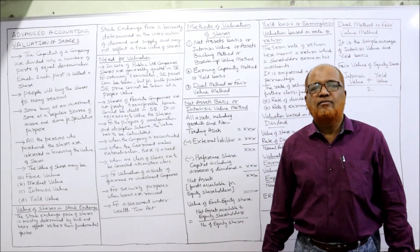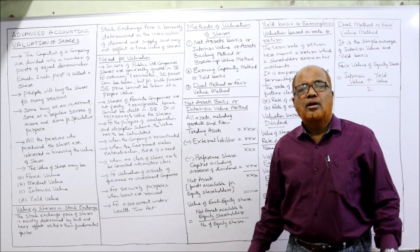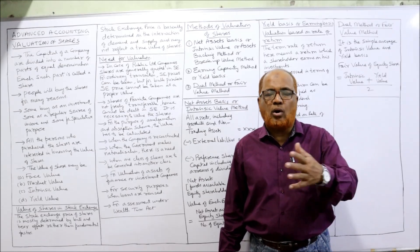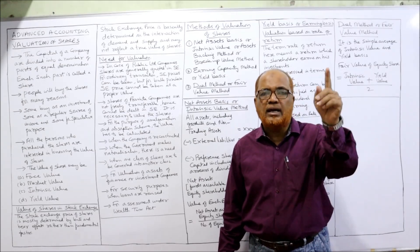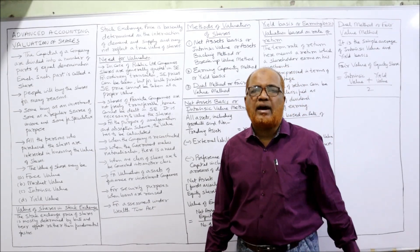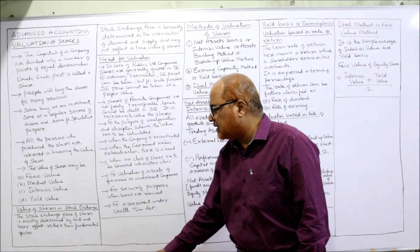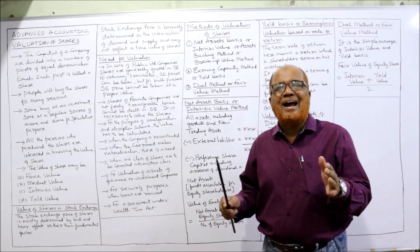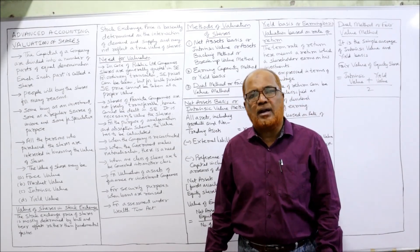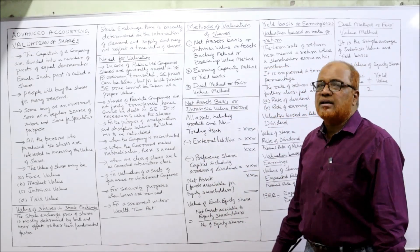A stock exchange is a market where securities — shares, debentures, bonds — are bought and sold. In the stock exchange we can always get a readily available value of shares, but this value is dependent on bull and bear effects rather than fundamental factors. The price is fixed according to demand, supply, and market trend.